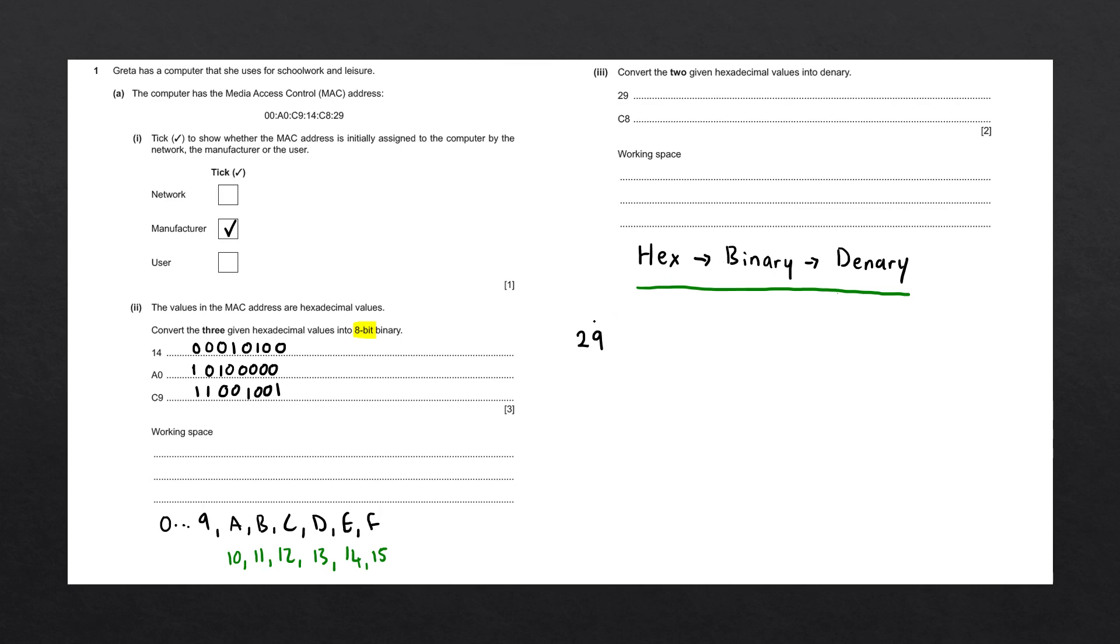So we'll do that for the first number 29. To convert hex into binary, we've done this already in this question. For the first number, we have 2, which gives us 1, 2, 4, and 8 for the binary bits. That gives us 0010. The next number is 9. Writing down our 4 binary bits: 1, 2, 4, and 8. The numbers are 8 and 1, so our binary number is 1001. We now have the binary number 0010 1001.